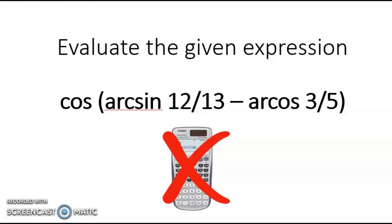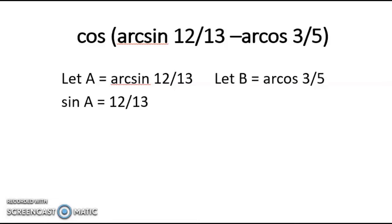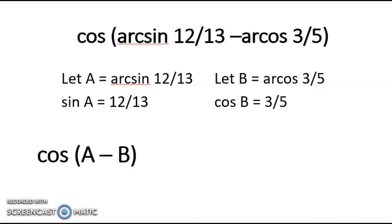In this video, I'm going to show you how to evaluate cosine of arcsine 12 over 13 minus arcsine 3 over 5 without using a calculator. First, we let A equal arcsine 12 over 13. This means that A is an angle whose sine is 12 over 13. And we let B equal arcsine 3 over 5. This means that B is an angle whose sine is 3 over 5. If we substitute arcsine 12 over 13 by A and arcsine 3 over 5 by B, the expression becomes cosine of A minus B.